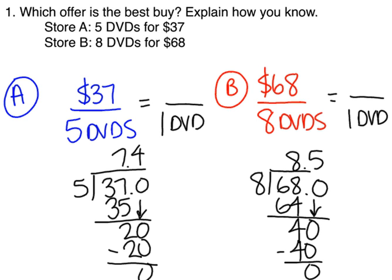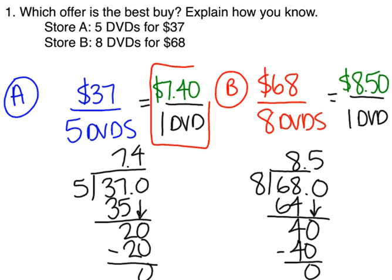Skipping ahead on the division, for store A, we're going to end up with $7.40 for 1 DVD. Store B, we're going to end up with $8.50 per DVD. When we compare those two values, we can see that store A has the cheaper cost per 1 DVD. So my final answer: store A has the best buy because it has a unit rate of $7.40 versus $8.50. You could even say that you save $1.10 per DVD by shopping at store A.